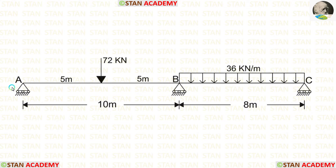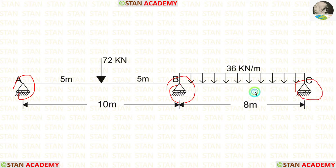There are three supports in this beam: at point A, point B, and point C. All the supports are roller supports.